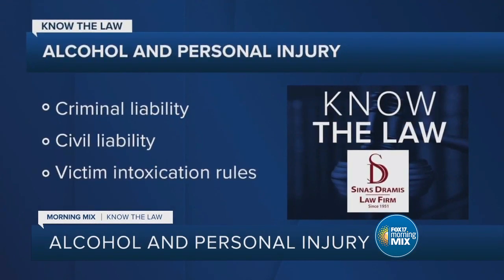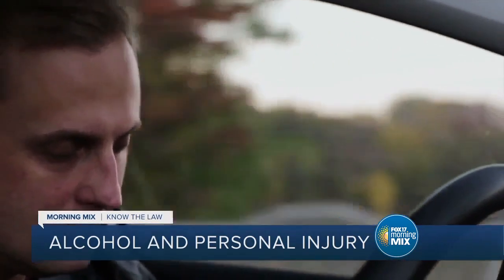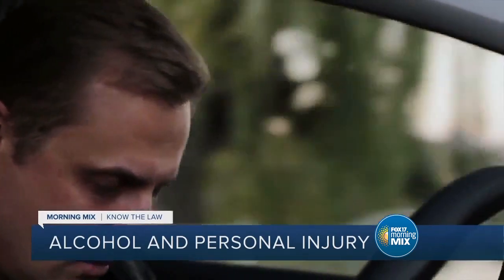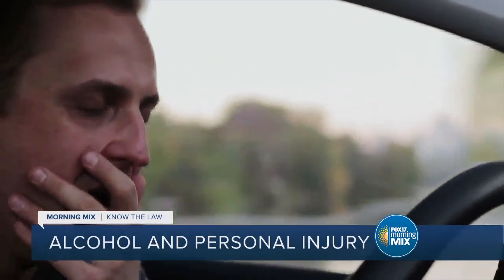Our justice system has a criminal justice system — the one where people can be incarcerated when they've committed certain crimes — and a civil justice system, which usually involves claims for money. Drunk driving cases almost always involve both. In our criminal justice system, someone is criminally liable for operating a vehicle under the influence if they are above 0.08. We also have a special criminal statute many people refer to as 'super drunk,' which is 0.17, and that increases criminal liability. Where criminal offenses become most serious is when alcohol is involved and someone either dies or is injured — those are felony offenses that can subject the drunk driver to as many as five or even ten years in prison.